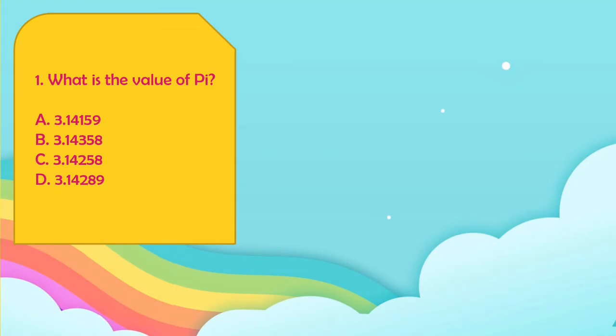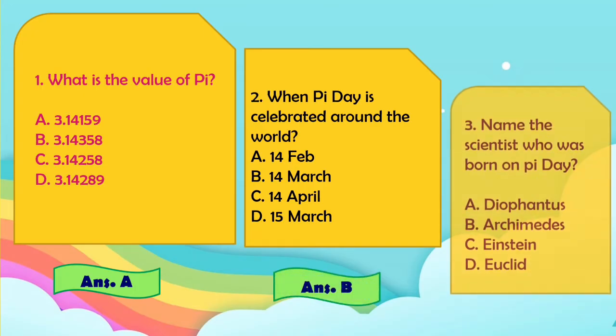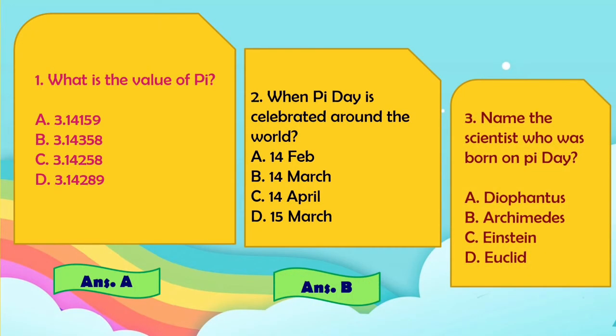What is the value of Pi? Yes, you are correct — the correct option is A: 3.14159. Second, when is Pi Day celebrated around the world? The answer is B: 14th March. Name the scientist who was born on Pi Day. Yes, C is the correct option — Einstein.